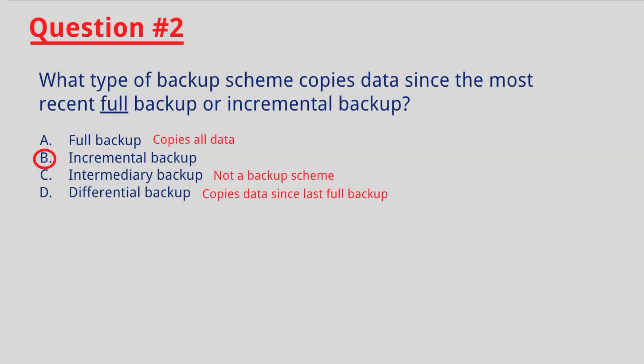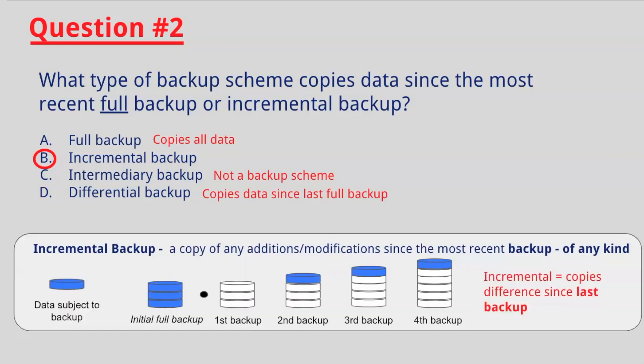Question number two asks about incremental backup. If you select B, you are correct. A full backup copies all data. An intermediary backup is not a backup scheme, and a differential backup copies data since the last full backup — whereas incremental copies the difference in data since the last backup of any kind.